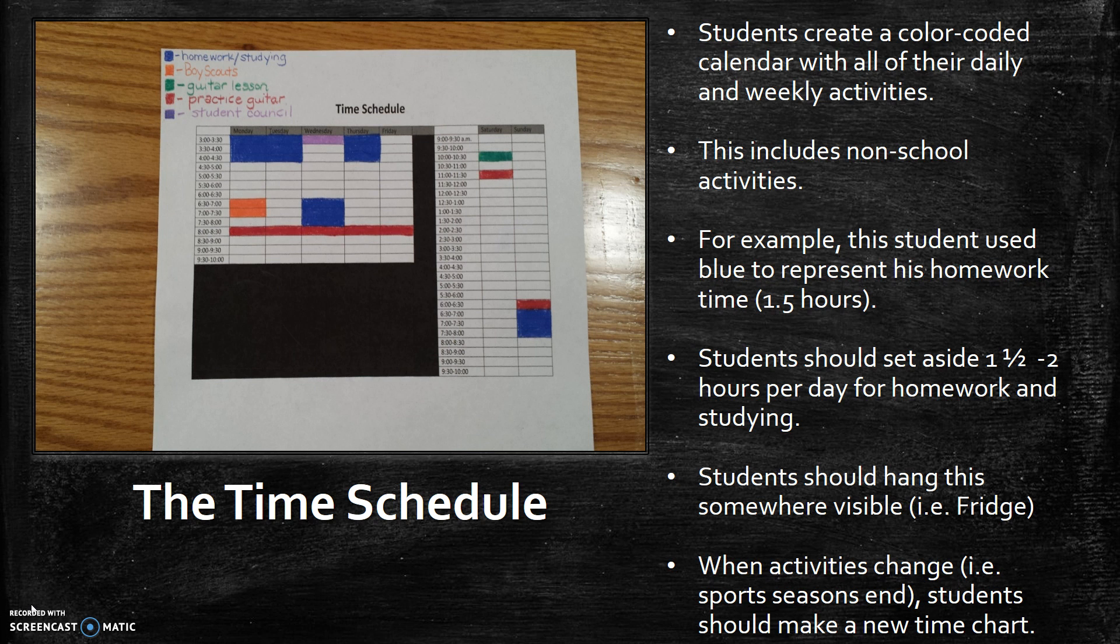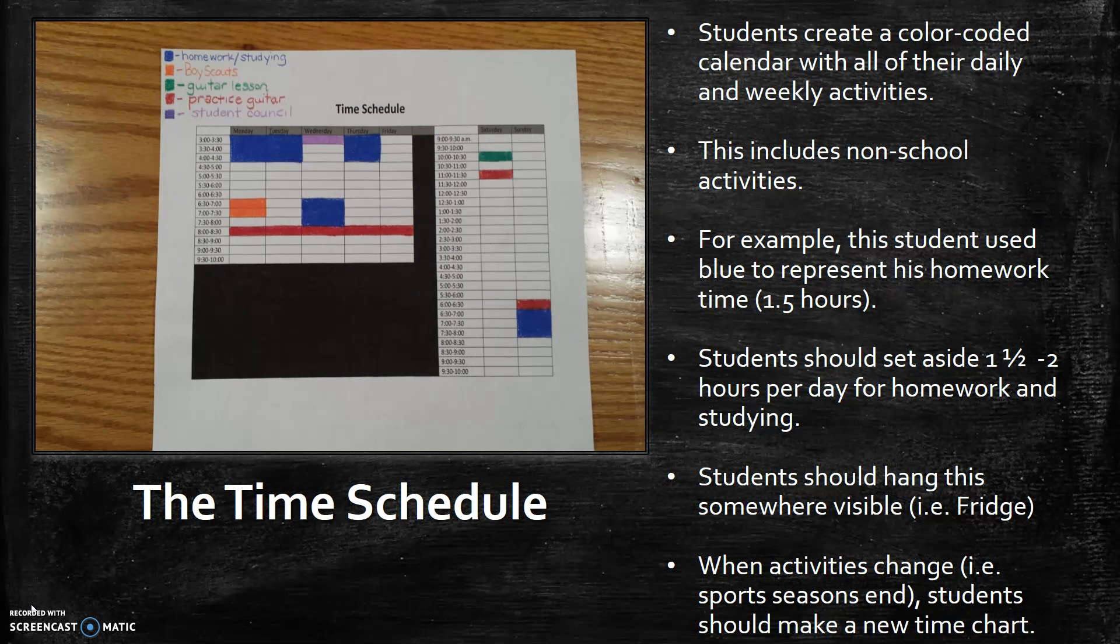Usually visible to the whole family would be even better you know put it on the fridge or the bulletin board in the kitchen or whatever but it's got to be something that the kids see every day and they know the routine and once again the routine they might not necessarily look at the time schedule every day because they know what to do.